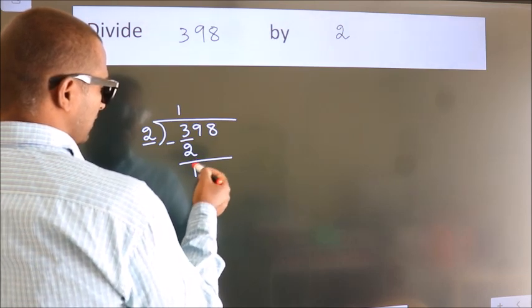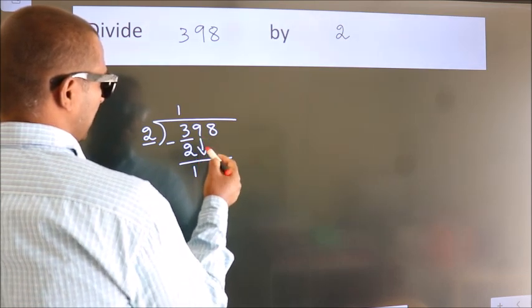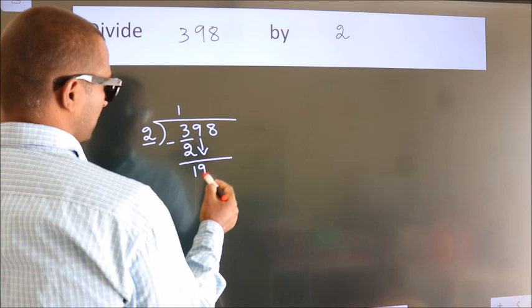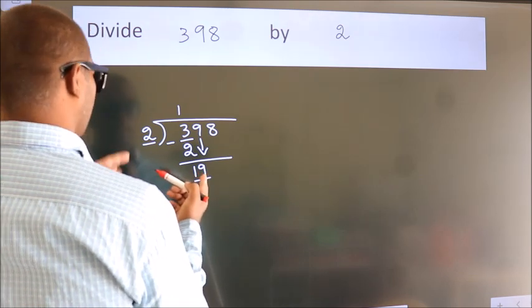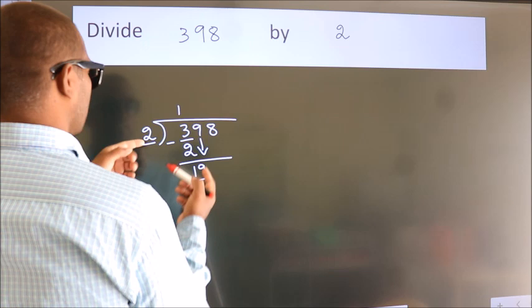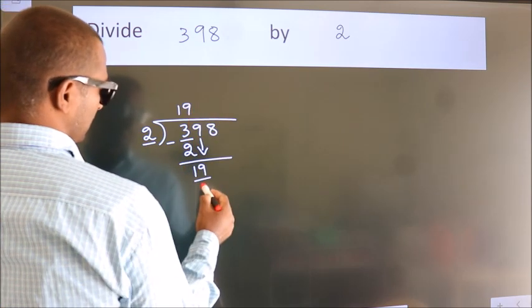After this, bring down the beside number. So, 9 down. So, 19. A number close to 19 in 2 table is 2 nines 18.